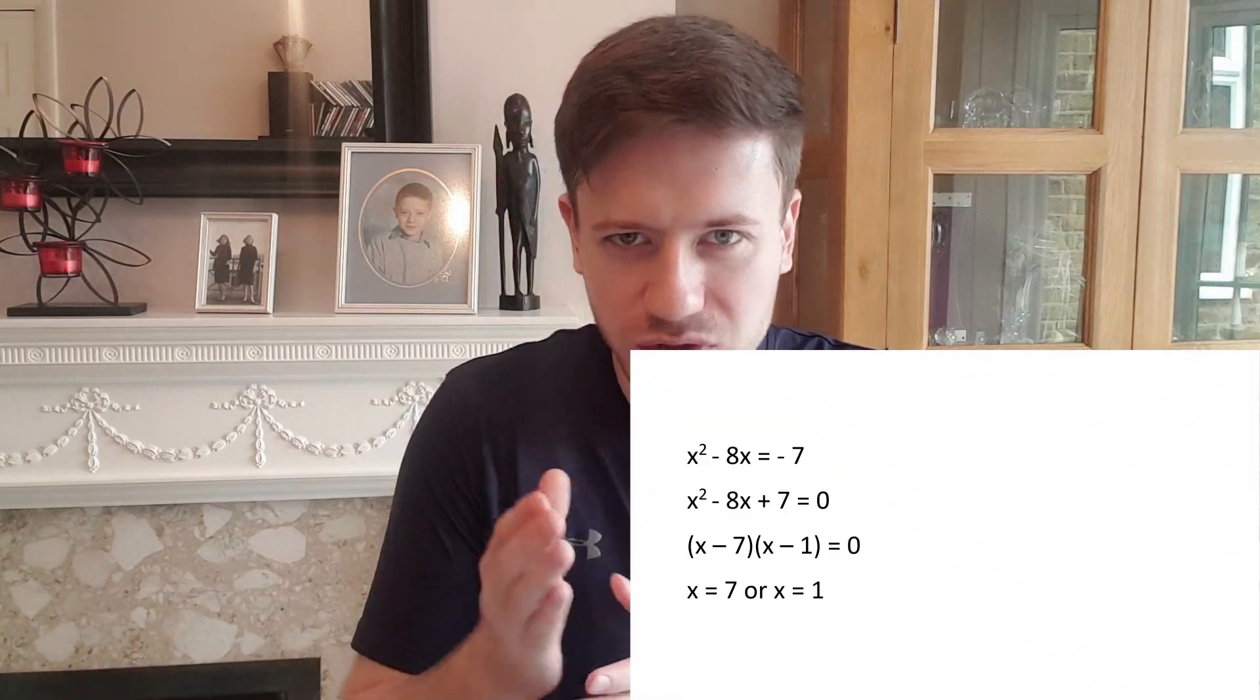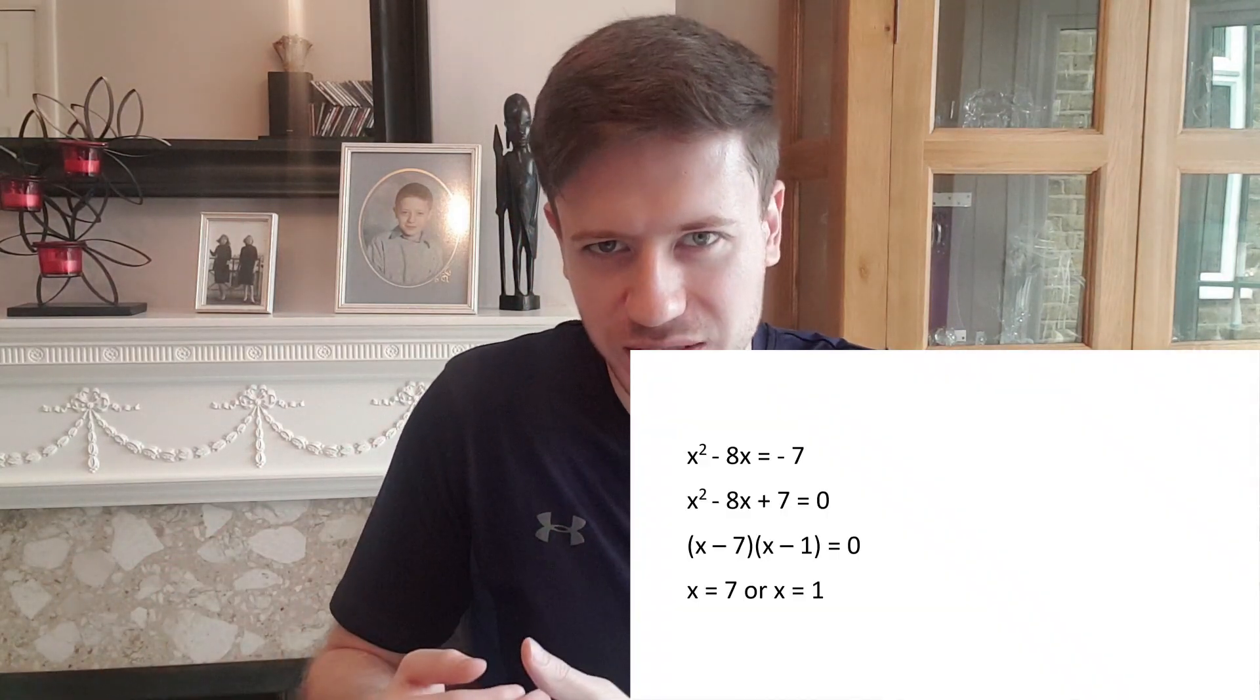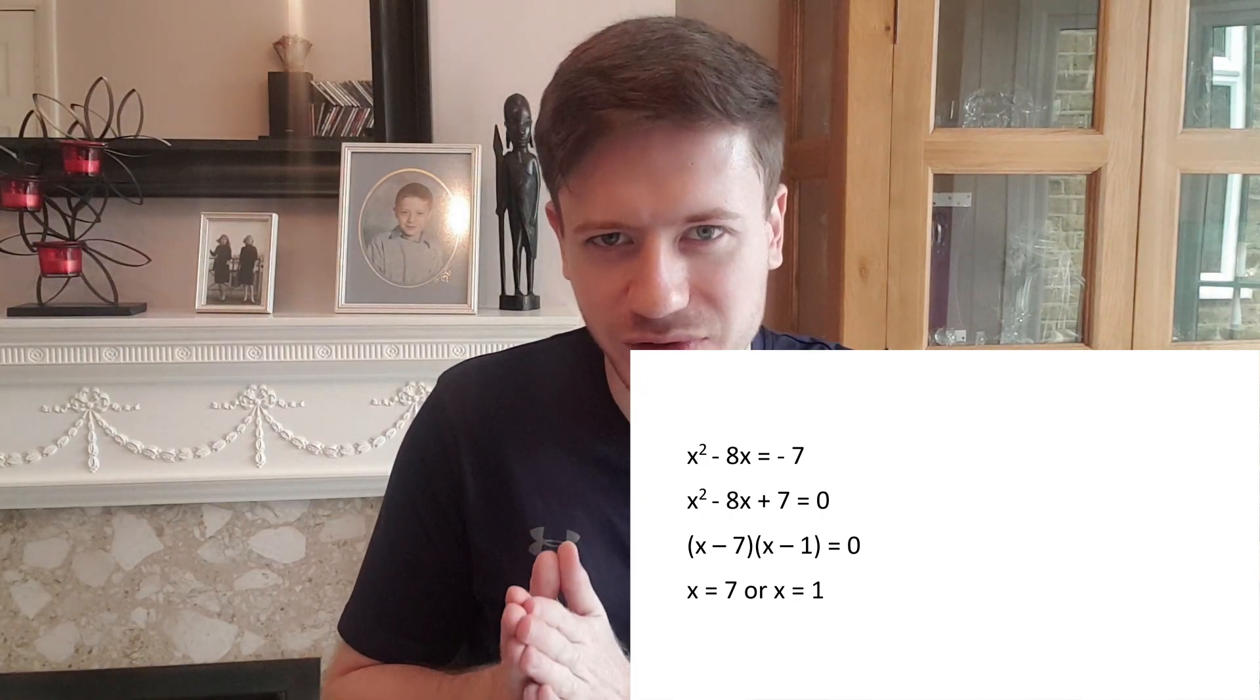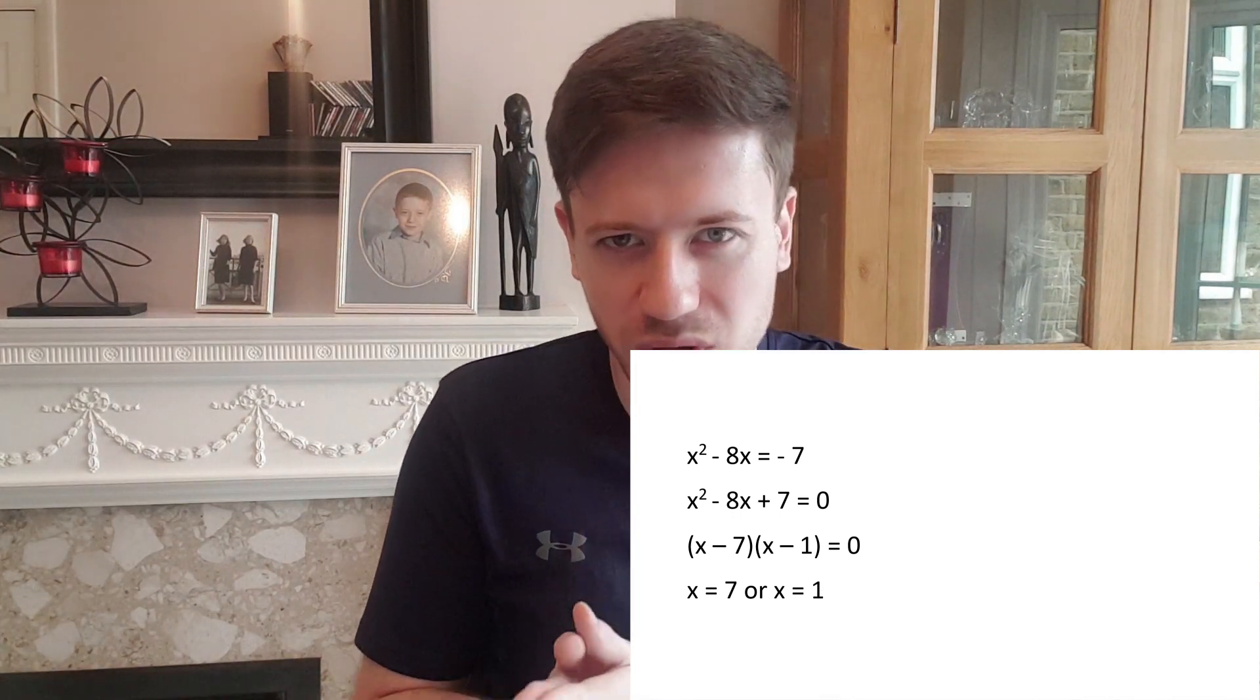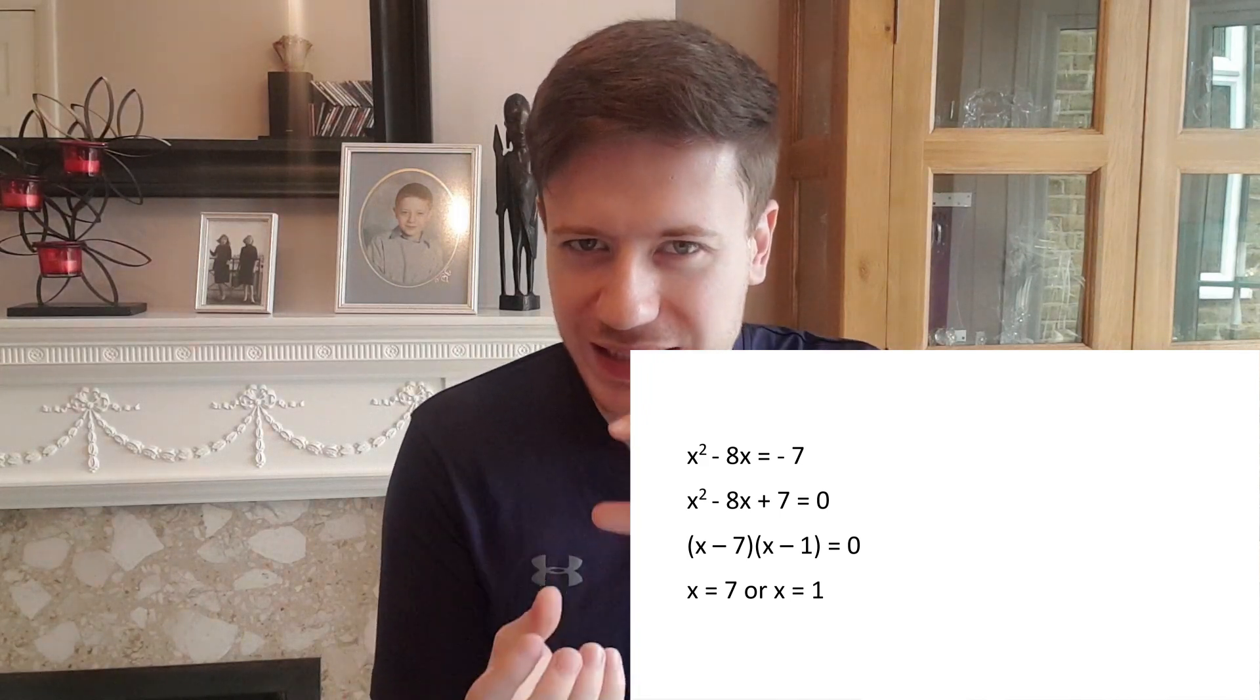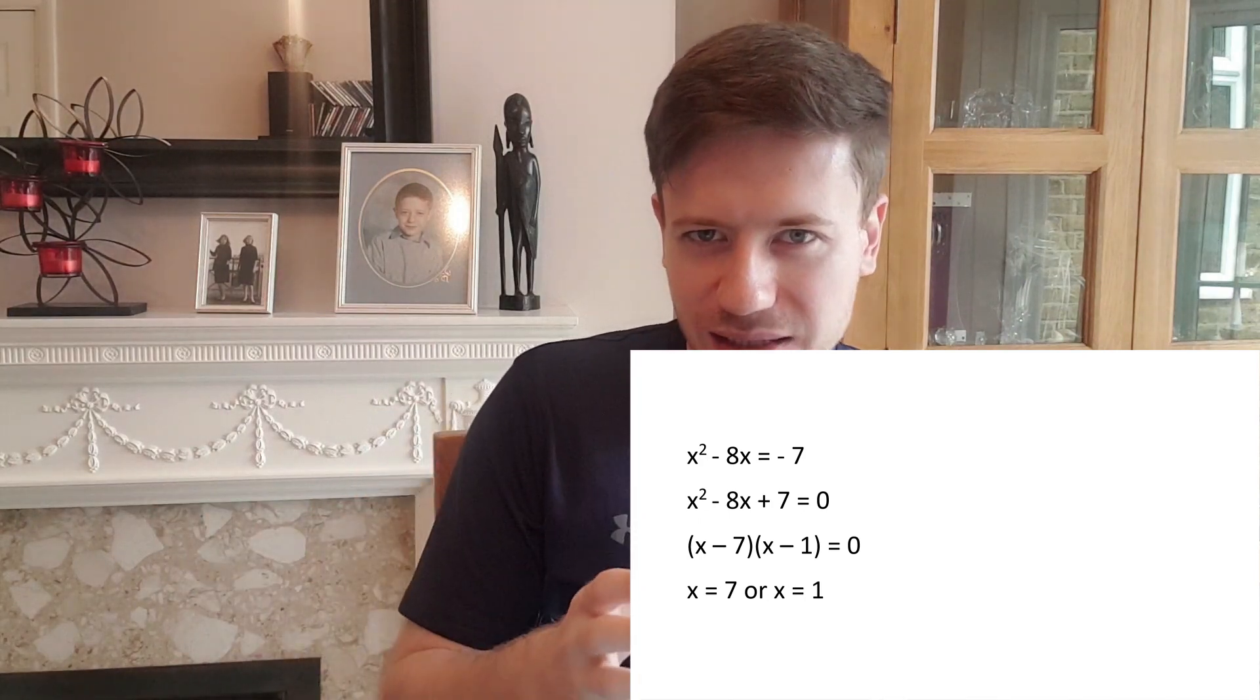So how would we solve it? First you'd bring the 7 across you'd equate the equation to 0 and then you'd have a go at factorizing. We now need two numbers that multiply to get plus 7 and add to get minus 8. As 7 is a prime number that's going to have to be 7 and 1 specifically minus 7 and minus 1 to get it to add up to minus 8. With our double brackets this becomes x minus 7, x minus 1 equals 0